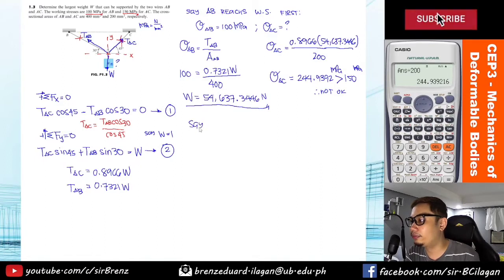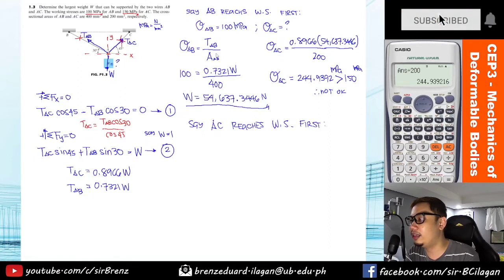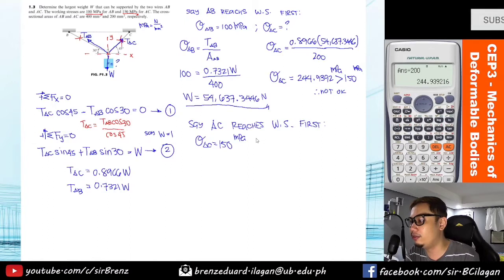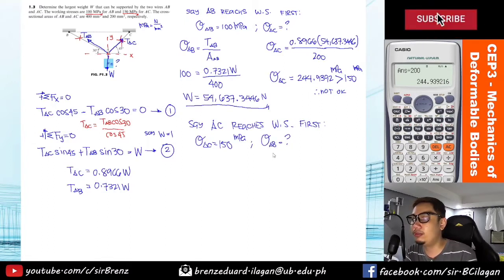So this is incorrect. Therefore the correct answer will lie if AC reaches the working stress first, or the one that will yield first is AC—stress AC which is 150 megapascals. So let's check that if that's what will happen. What we're looking for now is what will be the stress in AB.